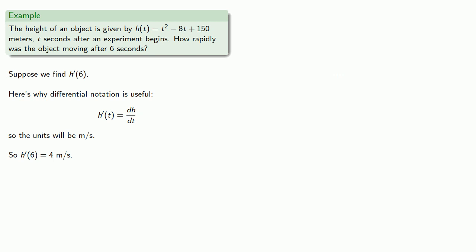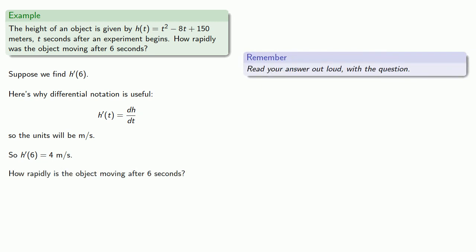Again we can gain some useful insight if we read our answer out loud with the question. How rapidly is the object moving after 6 seconds? 4 meters per second. The important thing here is that 4 meters per second does sound like it could be an answer to our question.